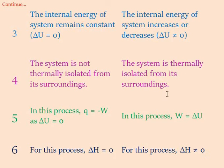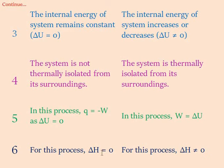Fifth point: in an isothermal process, q equals negative w, since delta U equals zero — this follows from the first law of thermodynamics. In an adiabatic process, w equals delta U. Sixth point: in an isothermal process delta H equals zero, meaning the change in enthalpy is zero, but in an adiabatic process the change in enthalpy delta H is not equal to zero.